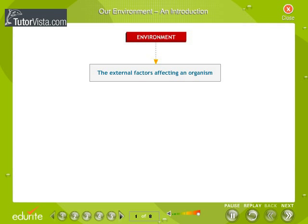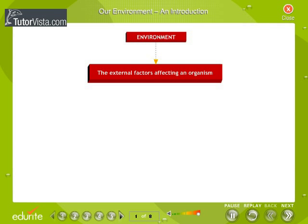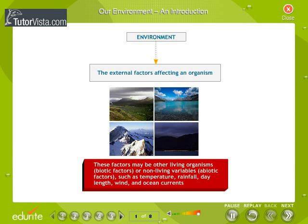Environment refers to all of the external factors affecting an organism. These factors may be other living organisms — the biotic factors — or non-living variables, the abiotic factors, such as temperature, rainfall, day length, wind and ocean currents.